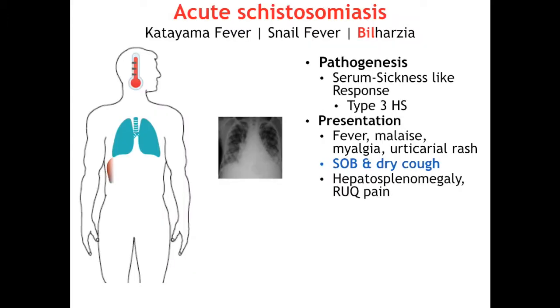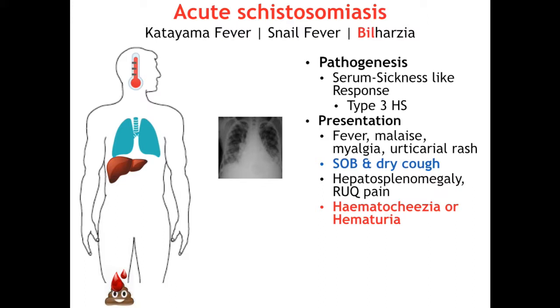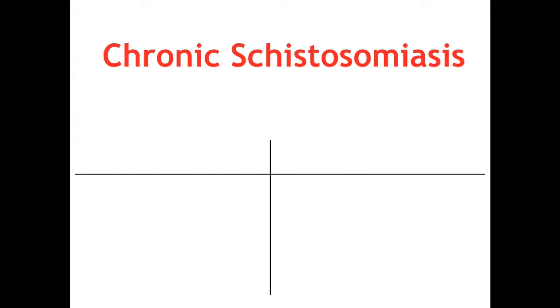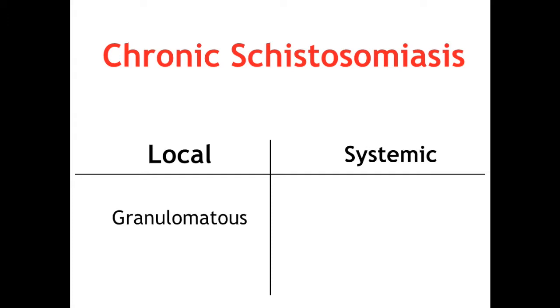Most of the flukes can cause hepatomegaly because they either mature or colonize the liver, and you'll see in the example question how this symptom helps narrow things down. Other symptoms that point to schistosomes are frank blood in either urine or stool. Katayama can be treated if caught but does self-resolve. If left untreated, patients are at risk of developing chronic schistosomiasis, taking months to years post-infection to become symptomatic. The effects of chronic schistosomiasis can be split into local and systemic categories, starting with the local immune response in the bladder or GIT, which is granulomatous.